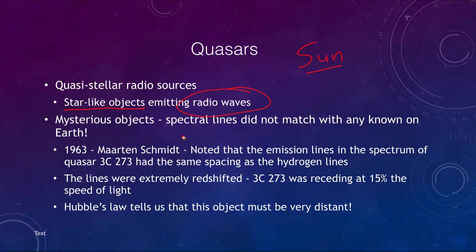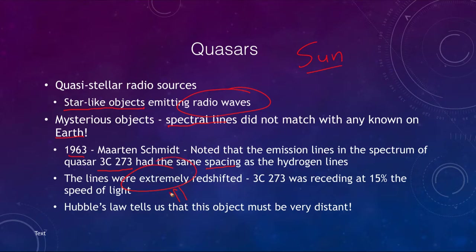The other issue was that the spectral lines did not match with any that were known here on Earth — what were these things made up of? Then in 1963, Martin Schmidt noted that the emission lines in the spectrum of a quasar known as 3C 273 had the same spacing as the hydrogen lines, but they were extremely redshifted — not just slight redshifts, but an extreme redshift — enough to show that it was receding at 15% the speed of light. That is extremely fast.